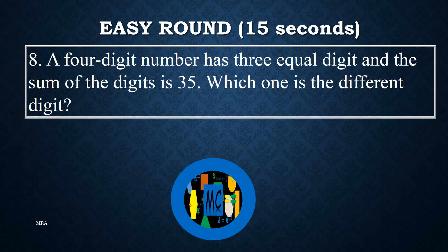Problem 8. A 4-digit number has 3 equal digits and the sum of the digits is 35. Which one is the different digit?